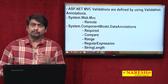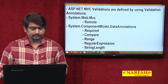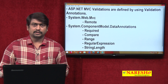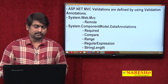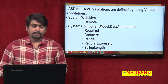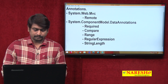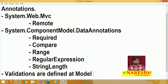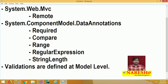We can use these annotations to validate the values. We need to make sure that contradictory and unauthorized data is not stored into the database. For that, we need validations, and in ASP.NET MVC, validations are defined at the model level. Generally, validations are defined in ASP.NET Web Forms at the page level using controls, whereas in MVC, the validations are defined at the model level.